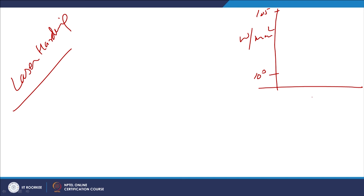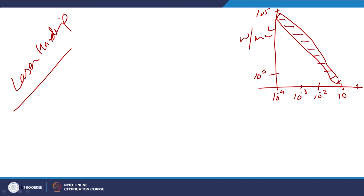In the laser process diagram, the x-axis represents interaction time in seconds from 10⁻⁴ to 10⁰ and beyond, and there is a particular band used for laser hardening of steels. The combination of exposure time and power density determines the laser interaction with the surface. Higher power density requires lesser laser interaction time for the hardening purpose.